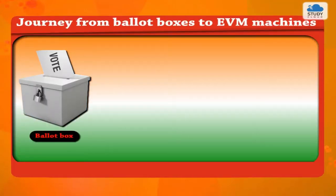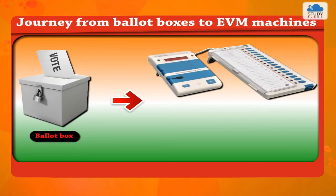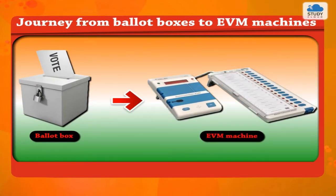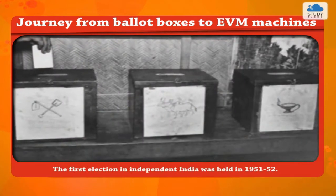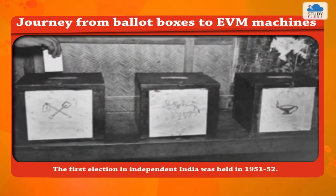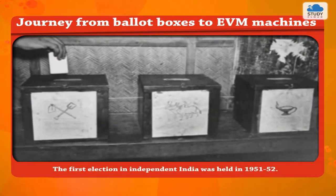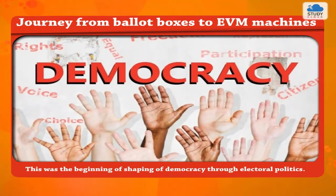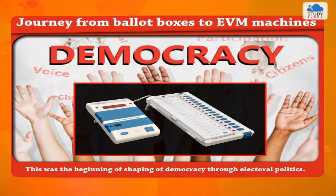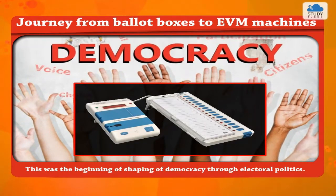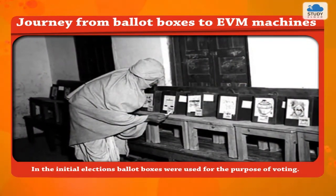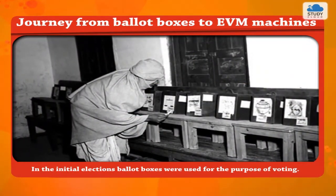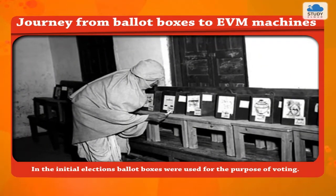Journey from ballot boxes to EVM machines. The first election in independent India was held in 1951-52. This was the beginning of shaping of democracy through electoral politics. In the initial elections, ballot boxes were used for the purpose of voting.